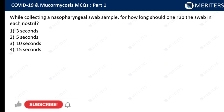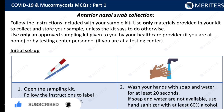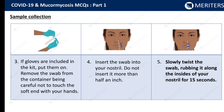While collecting a nasopharyngeal swab sample, for how long should one rub the swab in each nostril? The answer is 15 seconds. This is the swab collection method, along with a few details related to sample collection.